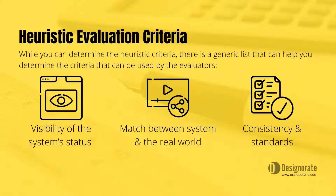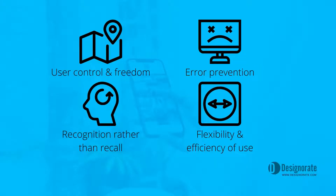Consistency and standards. Users should not have to wonder whether different words, situations, or actions mean the same thing. User control and freedom: users often perform actions by mistake. They need a clearly marked emergency exit to leave the unwanted action.